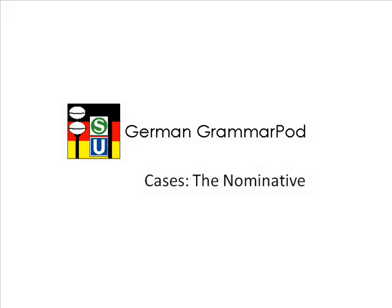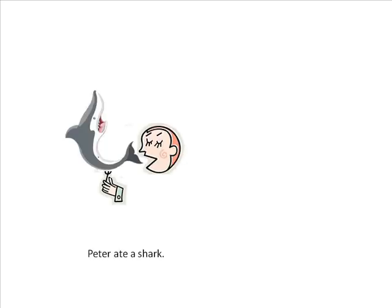A case is a way of showing what role a word is playing in a sentence. In English we do this with word order. So in the sentence 'Peter ate a shark,' we know that Peter is doing the eating and the shark is being eaten, because Peter was the first word and the shark was mentioned after the verb. In German, however, you can show which way round the sentence is happening by the case.